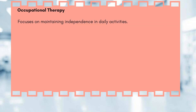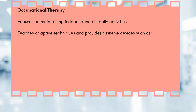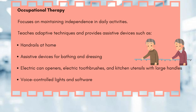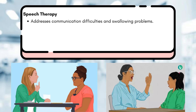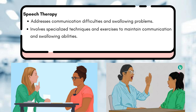Occupational therapy offers practical solutions for maintaining independence in daily activities. By teaching adaptive techniques and providing assistive devices like handrails, adaptive utensils and voice-control appliances, individuals with HD can navigate their surroundings more effectively. Speech therapy addresses communication challenges and swallowing difficulties commonly associated with Huntington's disease. Through specialized techniques and exercises, speech therapists help patients maintain their ability to communicate and swallow safely.